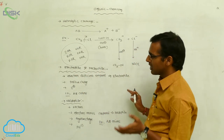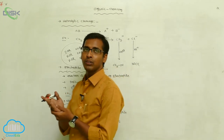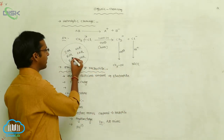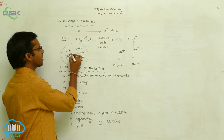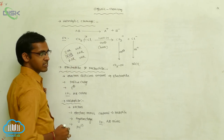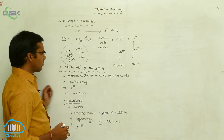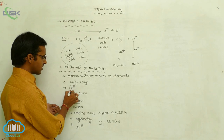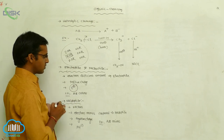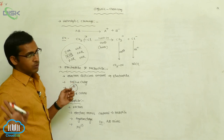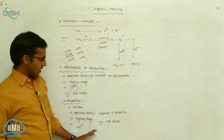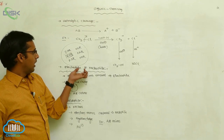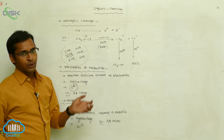For example, benzene is your organic compound. These benzene organic compounds participate in electrophilic substitution reactions. Here, an electrophile is formed that carries a positive charge. So these are the examples of electrophile and nucleophile.